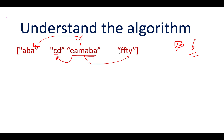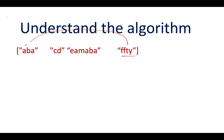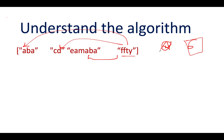Next we have 'ffdy'. We compare 'ffdy' with 'aba' — not a subsequence, happy case. Then 'ffdy' versus 'cd' — not a subsequence, happy case. Then 'ffdy' versus 'eamaaba' — not a subsequence, happy case. The length of 'ffdy' is 4. However, in the previous step we calculated the length to be 6. Since 4 is lower than 6, we ignore it.